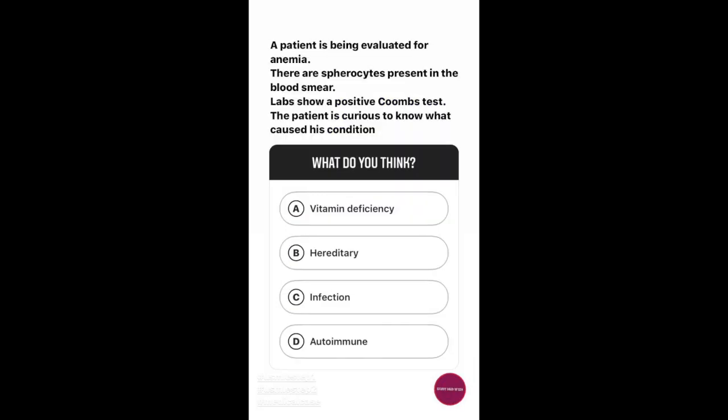Question number 4. A patient is being evaluated for anemia. There are spherocytes present in the blood smear. The patient is curious to know what caused his condition. What do you think? Option A, vitamin deficiency. Option B, hereditary. Option C, infection. Option D, autoimmune. The answer to this question is autoimmune.